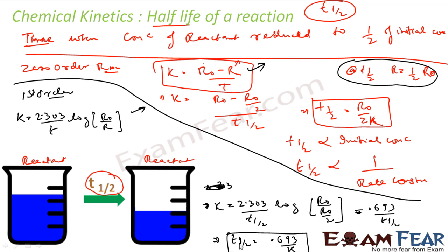Notice that for first-order reaction, T½ = 0.693 / K — it is independent of initial concentration and inversely proportional to rate constant. In contrast, for zero-order reaction T½ is directly proportional to initial concentration. This independence from concentration is a very critical observation for first-order reactions.